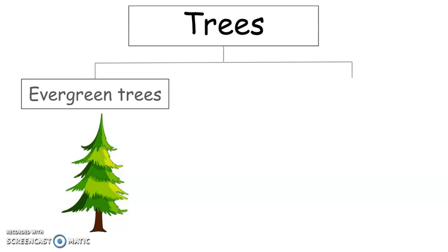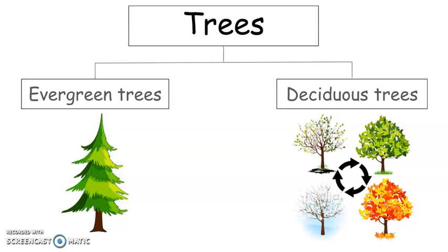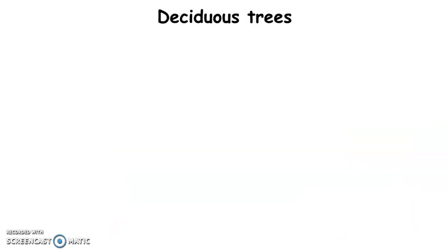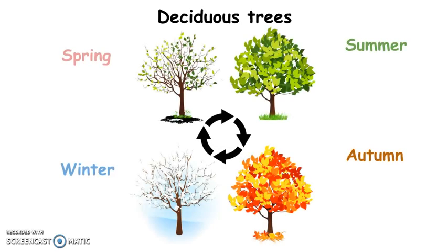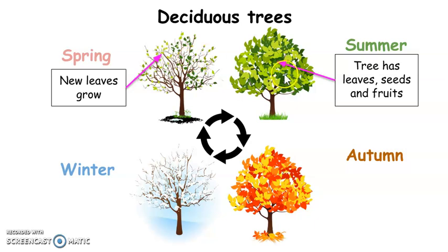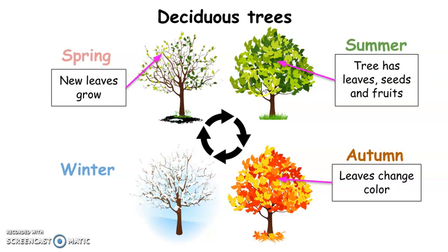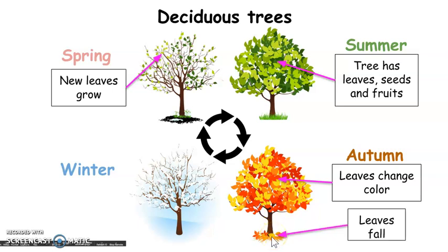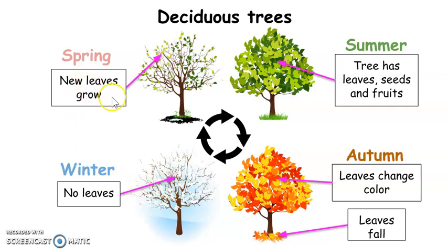Now, let's look at the other group: deciduous trees. Deciduous trees change — they lose their leaves. Look. This is the same tree in different seasons. In spring, new leaves grow. In summer, the tree has all its leaves, seeds, and fruits. In autumn, the leaves change color and the leaves fall to the ground. This is the tree losing its leaves. Then, in winter, the tree has no leaves. But in spring, it starts again.